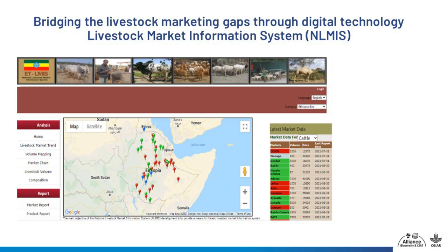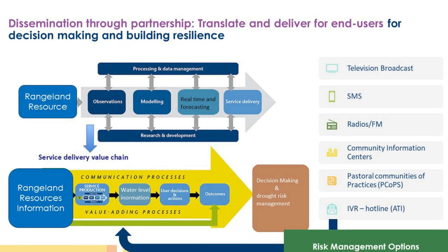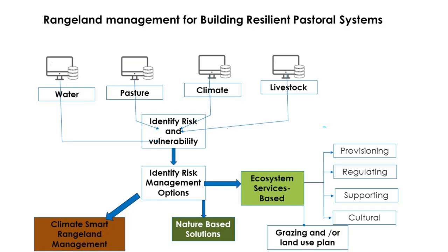Finally, we have a market information system, which is digitized real-time market information across different pastoral markets. Anyone can access this information using the web portal, SMS, and the government also disseminates it through different government media channels. After we develop this information, we disseminate it through all available channels to ensure the community benefits. At the end, what we are hoping to integrate — and have already integrated — is water, pasture, climate, and livestock risk embedded into one livestock or dryland decision support system for improved early warning activity and improved response. Thank you.